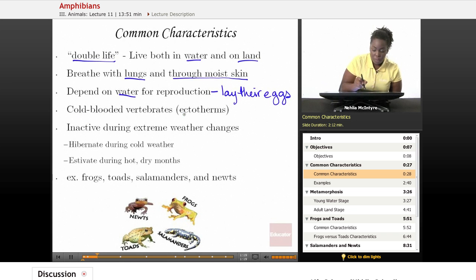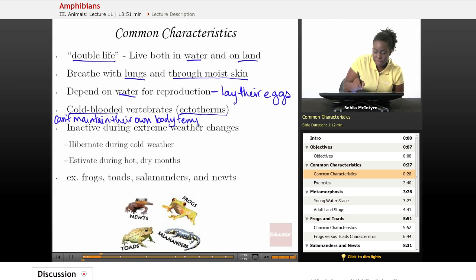All amphibians are what we call ectotherms. Ectotherms means that they are cold-blooded vertebrates, and they cannot maintain their own body temperature. So their body temperature is based upon their environment.